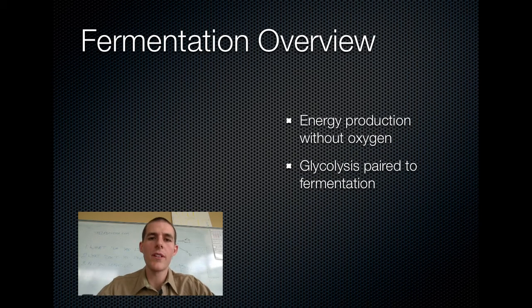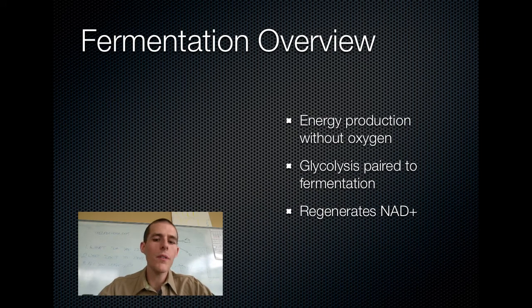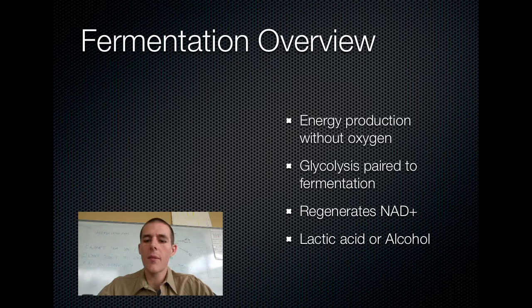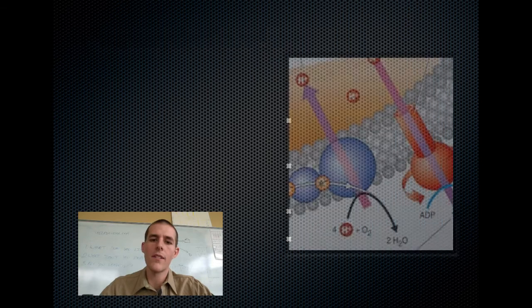Glycolysis pairs to fermentation. In a classic cellular respiration cycle where you've got oxygen present, you go glycolysis, Krebs, electron transport chain. Without oxygen, no Krebs, no electron transport chain. So you have glycolysis and fermentation. Its whole purpose is to regenerate NAD+. And there are two types: lactic acid and alcohol fermentation. Let's talk about each one of these points in a little bit more detail.